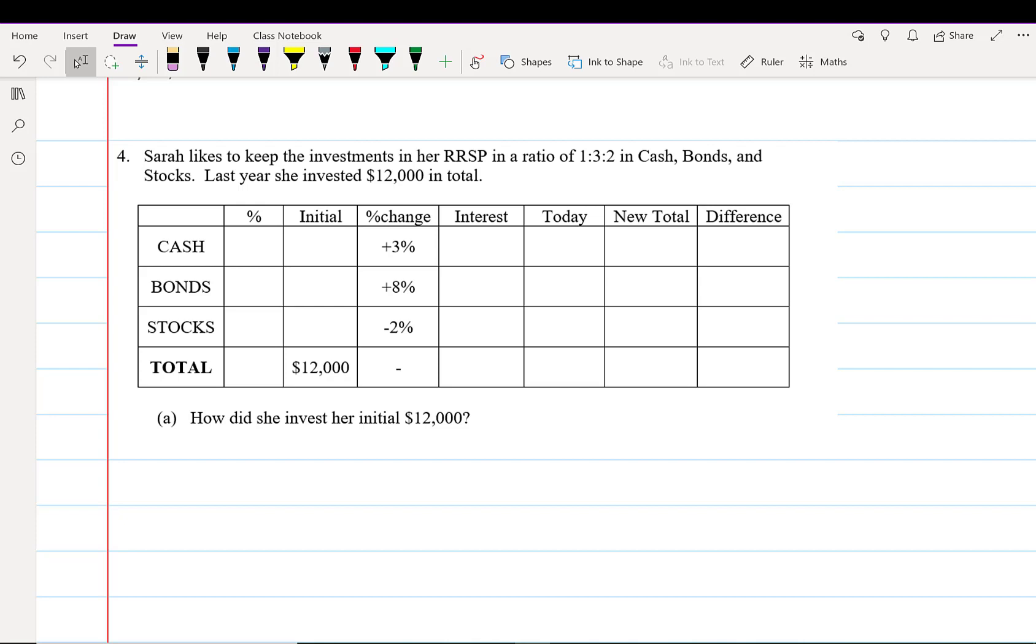First, this is a ratio problem. We have cash to bonds to stocks is equal to the ratio of 1 to 3 to 2.